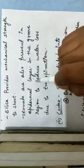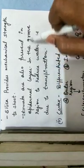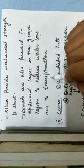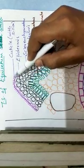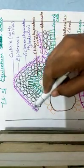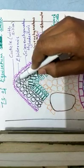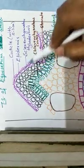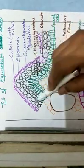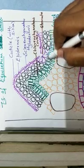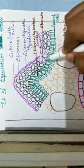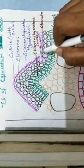The epidermis layer is interrupted by stomata, and these stomata are present in the groove region to reduce water loss. Looking at the diagram, the outer lining shows the cuticle lined with silica, followed by the epidermis layer with thickening. The groove region contains stomata, which are sunken stomata present in a cavity — this cavity reduces transpirational loss.